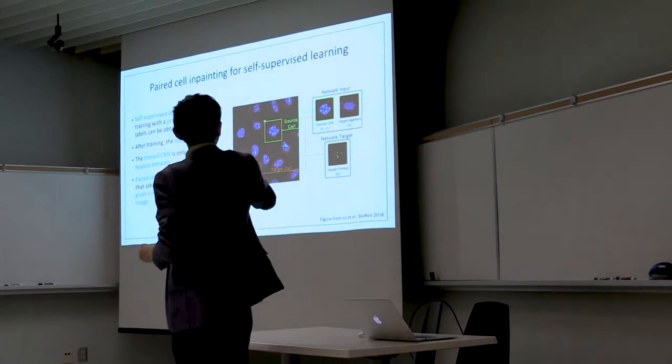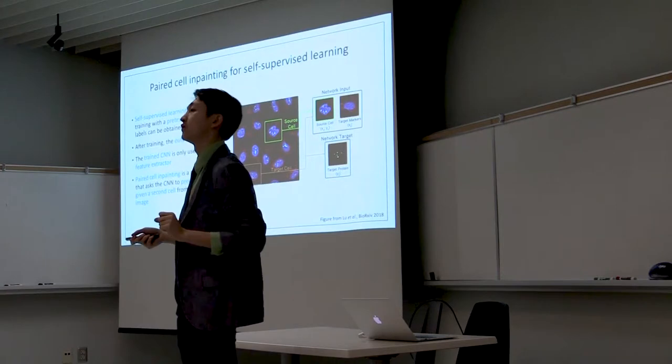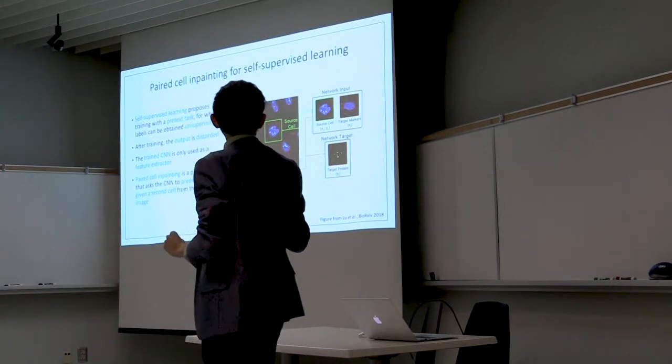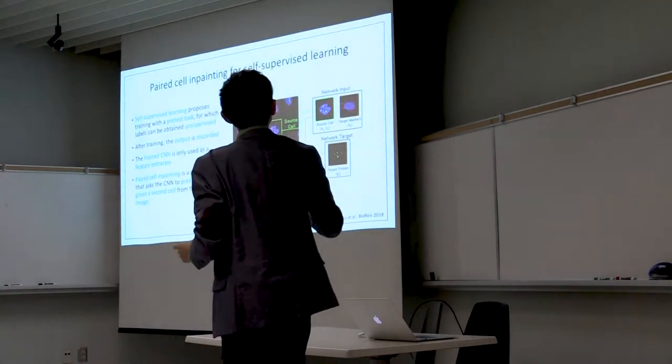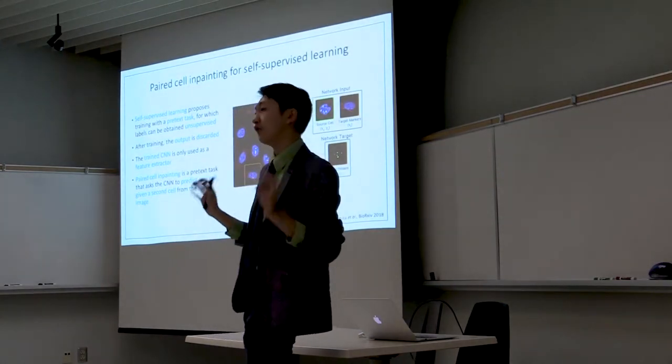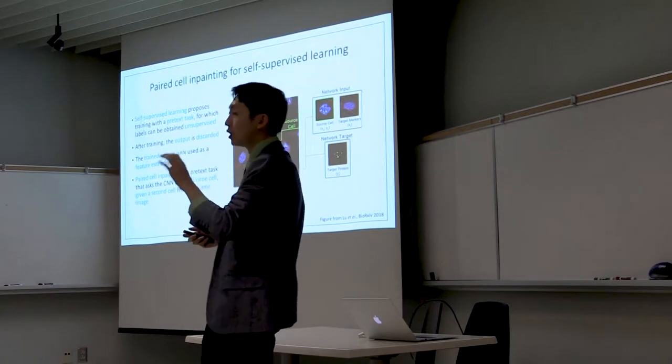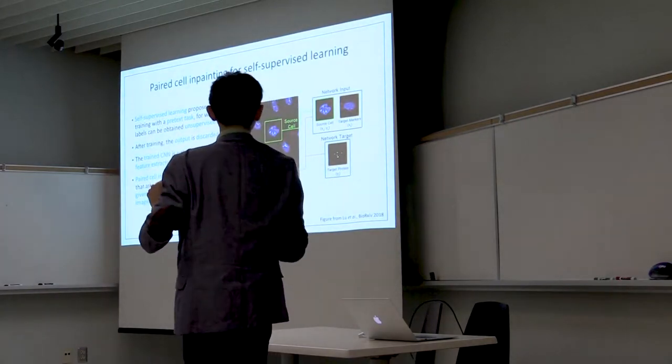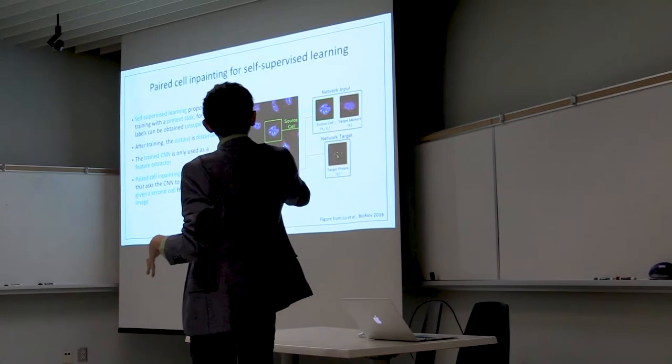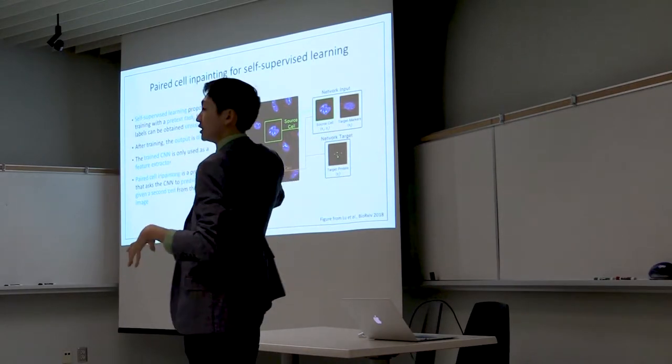So here's what we're going to do. We're going to take a random cell from this image. We'll call this the source cell. And we'll show the neural network all three channels of this image. And then we're going to take another random cell from the same image, and we'll show the neural network just the shape of this cell. So in this case, we'll show the neural network the blue nucleus and the red microtubule channels.